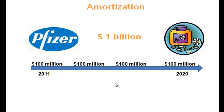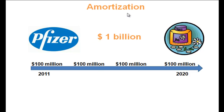The concept applies to an intangible object like R&D — you can't touch it or feel it. That one billion dollars is probably the salaries of scientists, office rent, and ingredients used for experiments. That is amortization: expensing intangible items over the lifetime of that item on your income statement.